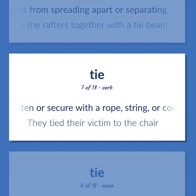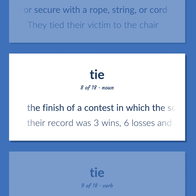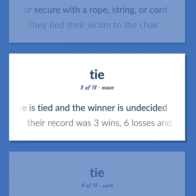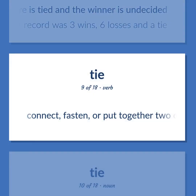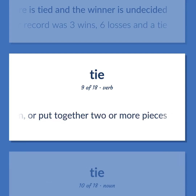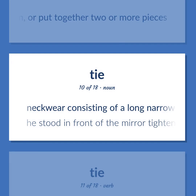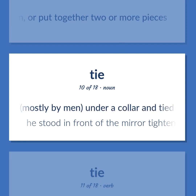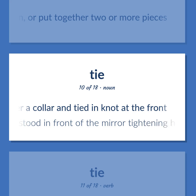Fasten or secure with a rope, string, or cord. They tied their victim to the chair. The finish of a contest in which the score is tied and the winner is undecided. Their record was three wins, six losses and a tie. Connect, fasten, or put together two or more pieces. Neckwear consisting of a long narrow piece of material worn, mostly by men, under a collar and tied in a knot at the front. He stood in front of the mirror tightening his necktie.